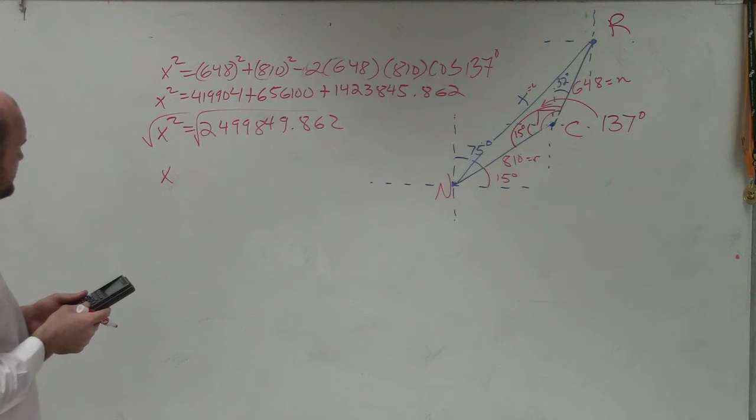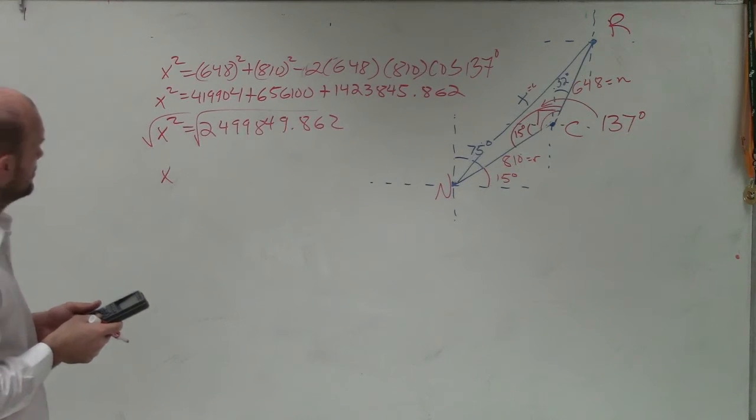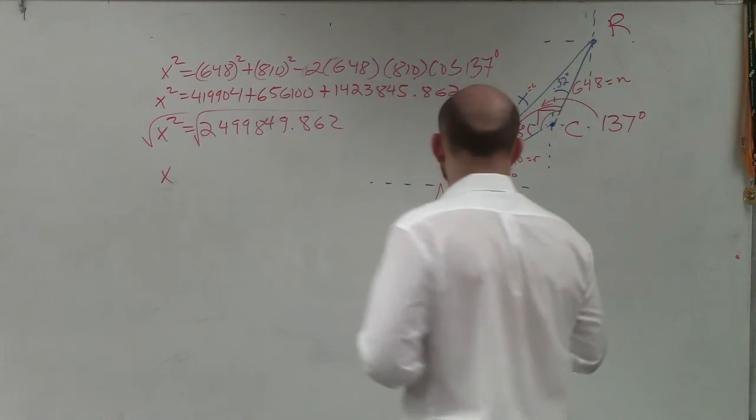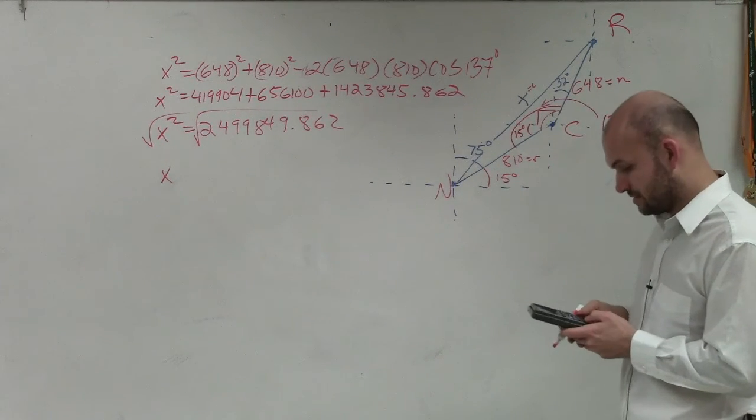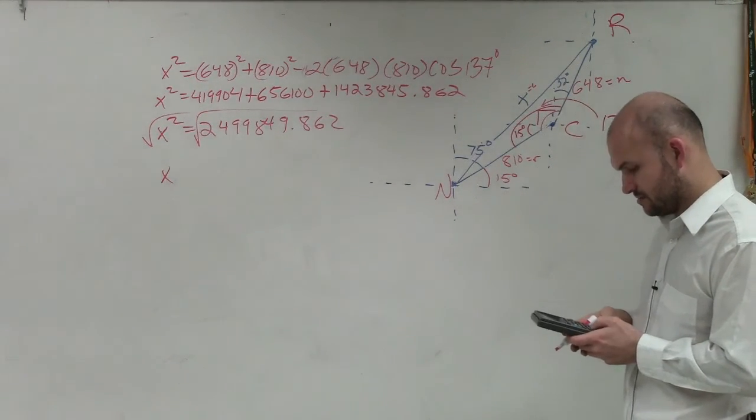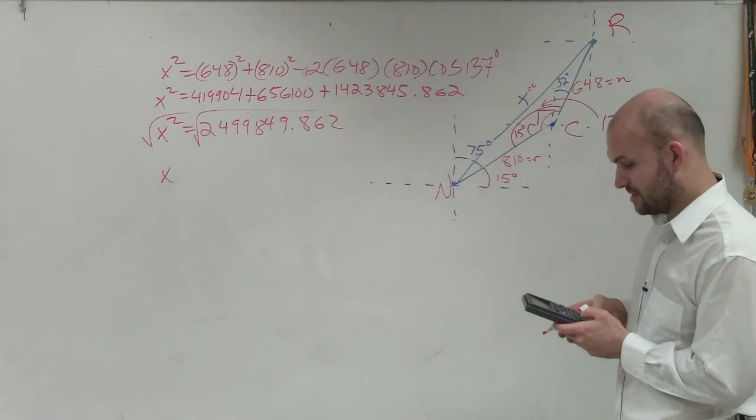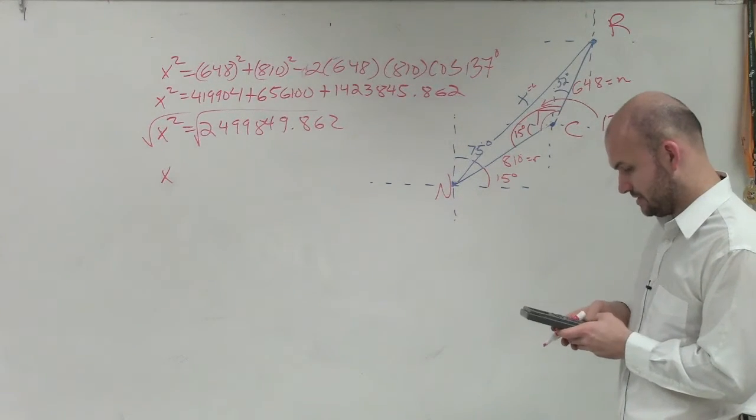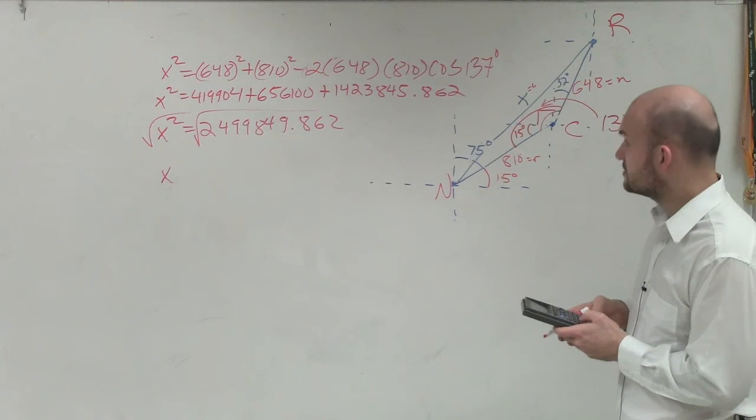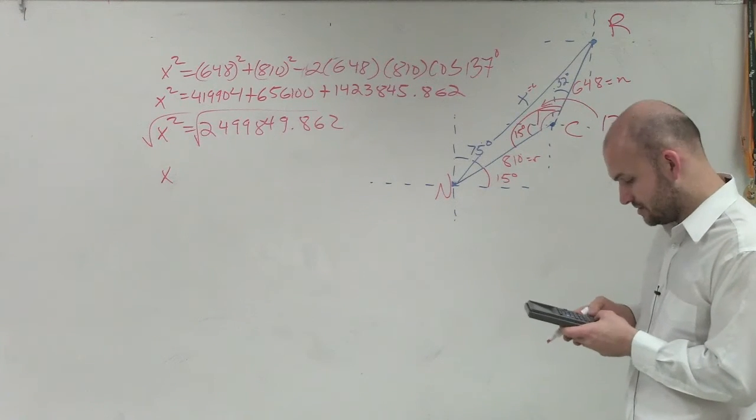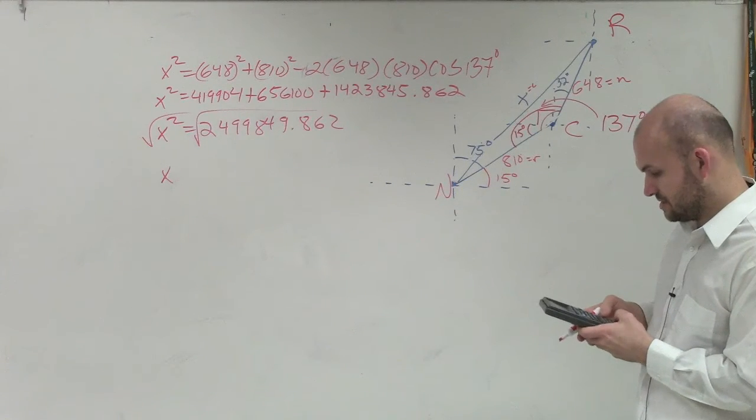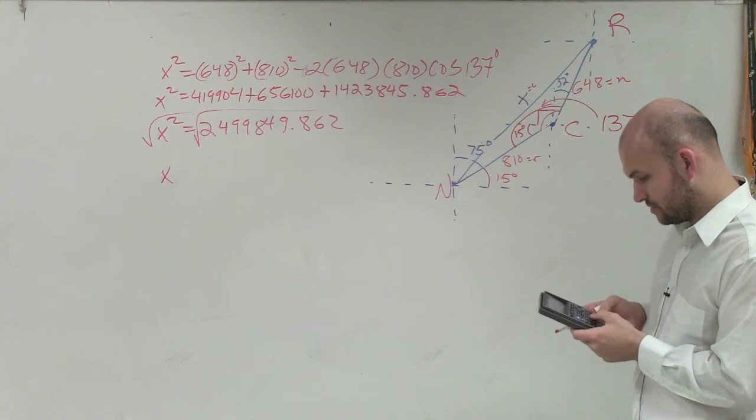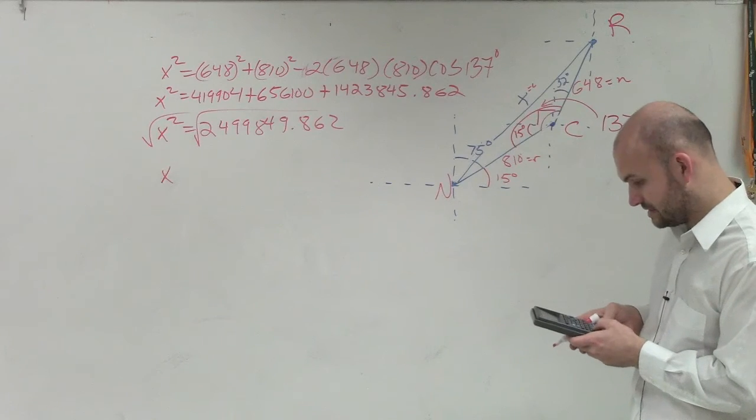419. Oh, 904. These are the correct numbers. 810, 648, right? Yes. Okay. Let me just double check. That's correct, 904. 810 squared, 656,100. That's correct. 2 times 648, maybe I typed it in wrong, times 810 times the cosine of 137.